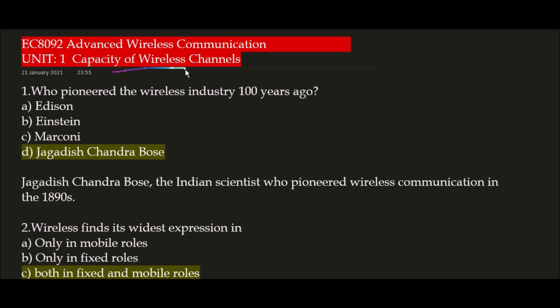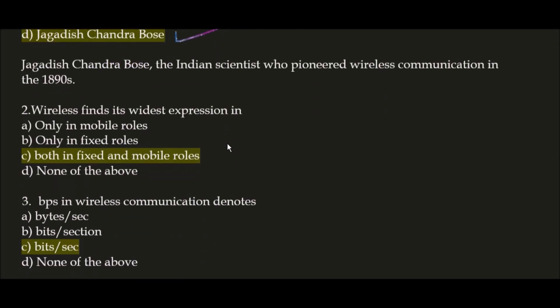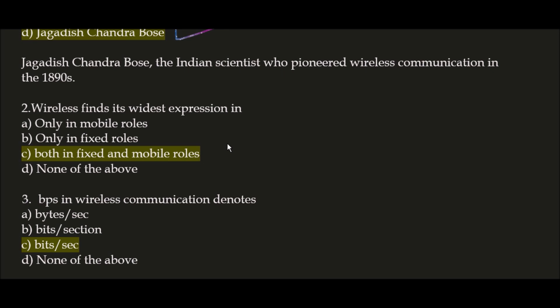In this Advanced Wireless Communication session, we have multiple choice questions and answers. The first question is: who pioneered the wireless industry 300 years ago? The correct answer is option D — Jagdish Chandra Bose, the Indian scientist who pioneered wireless communication in the 1890s.